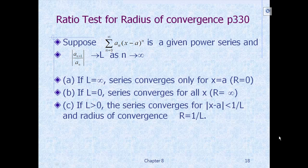Suppose we have a power series given by a_n times (x - a)^n, where a is the center. Then what we do is look at the ratio of a_{n+1} over a_n in absolute value. Suppose the limit as n goes to infinity is L. If L is infinity, then the radius of convergence is 0, and the series converges only at x equal to a.